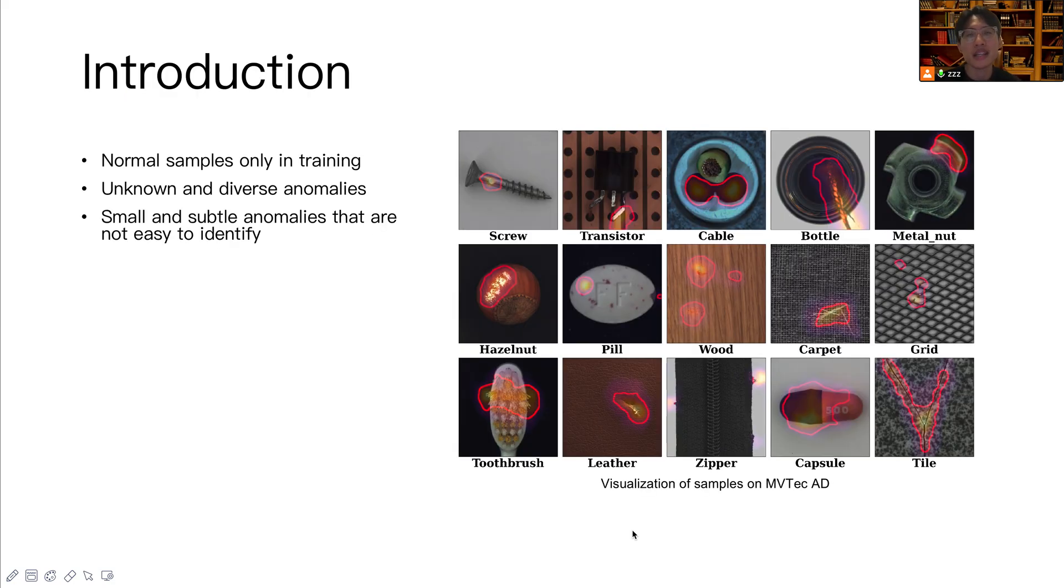The task of anomaly detection tries to classify whether an image has anomalies or not, and the anomaly localization tries to segment the region of anomalies. The figure on the right shows our anomaly segmentation result on the EnvyTag anomaly detection dataset. This task is challenging because there are normal image samples in the training set only. The anomalies are unseen.